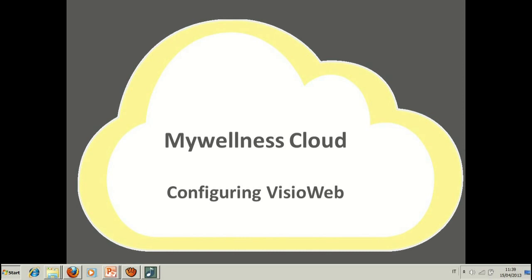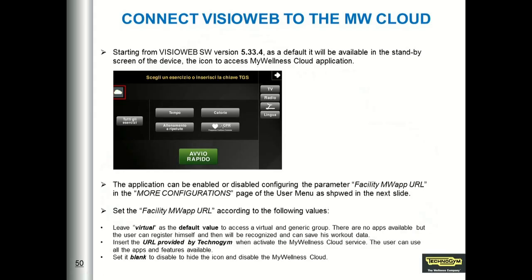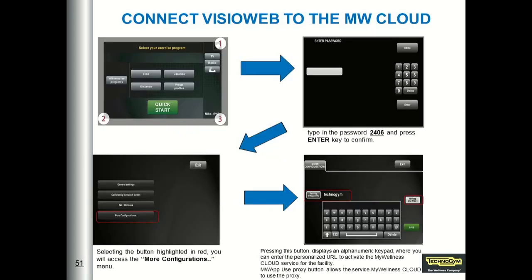Another hardware component of MyWellnessCloud is VisioWeb. Starting from version 5.33.4, VisioWeb can be connected to MyWellnessCloud — you can see this because in the standby screen there is an icon with a cloud. To connect VisioWeb to the cloud, very similar to what we have seen with VisioSelf, VisioWeb needs to be connected to the network, the facility URL needs to be inserted into its configuration, and also for VisioWeb we need to set time and timezone. For connecting VisioWeb to the network, you can follow the same procedure seen for VisioSelf, because the menus are exactly the same.